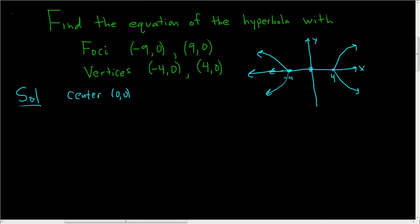Now the distance from the center to the vertex is a. So in this case, a is equal to 4. And the foci are here and here. My picture is not drawn to scale. So that's 9 and that's negative 9.